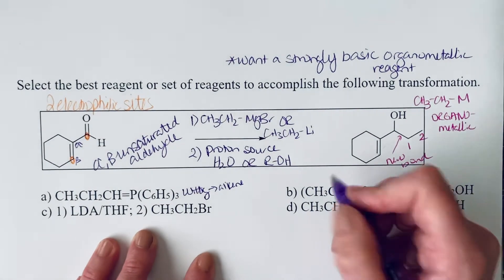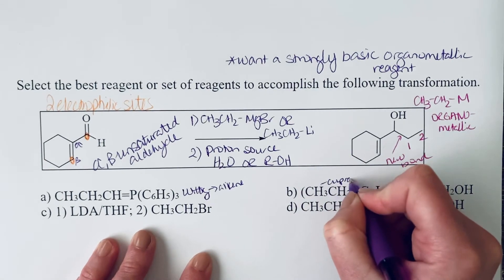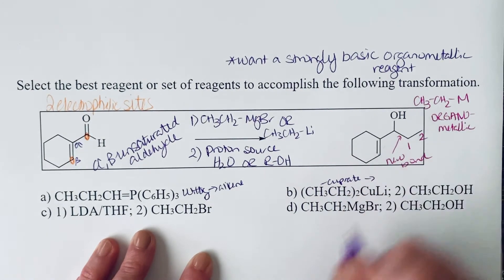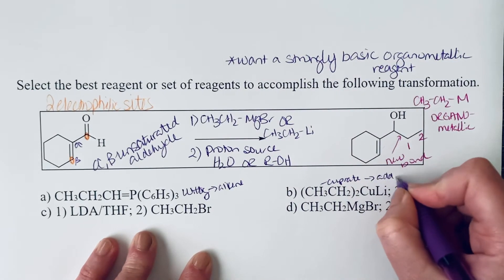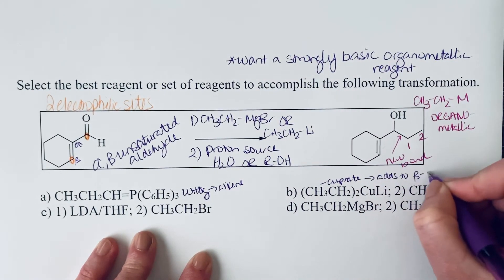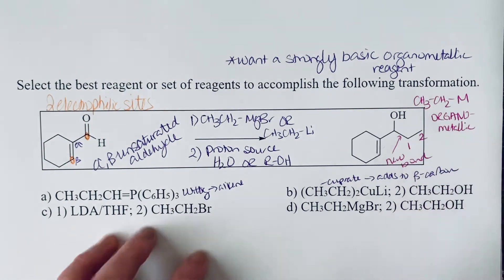If we look at B, this is a cuprate. This would add to the beta carbon. This would be one of those less reactive organometallic reagents that would add to the beta carbon. So that is not what we're looking for.